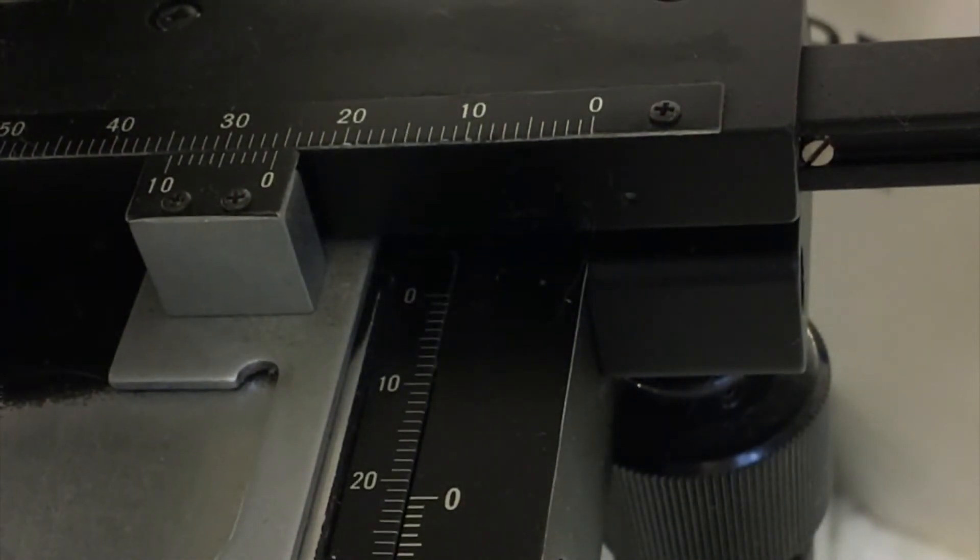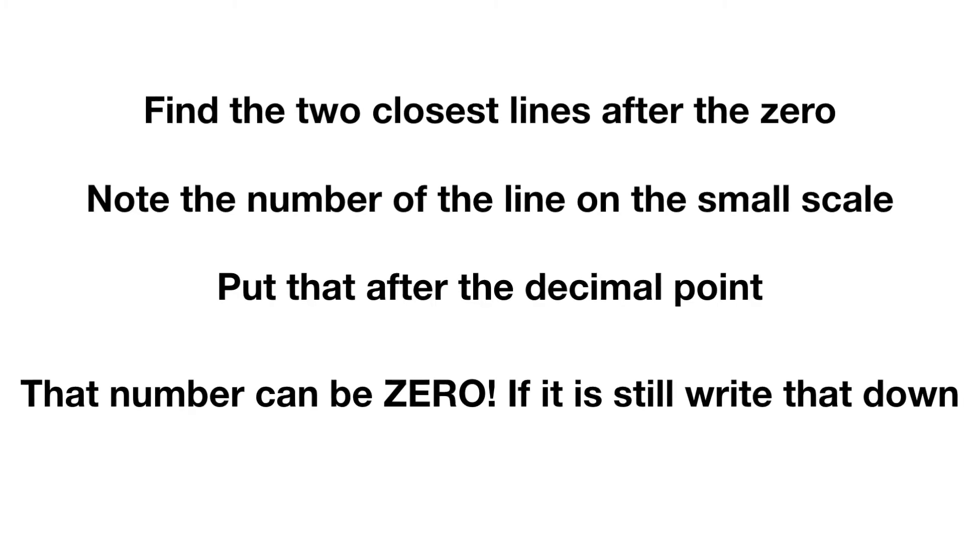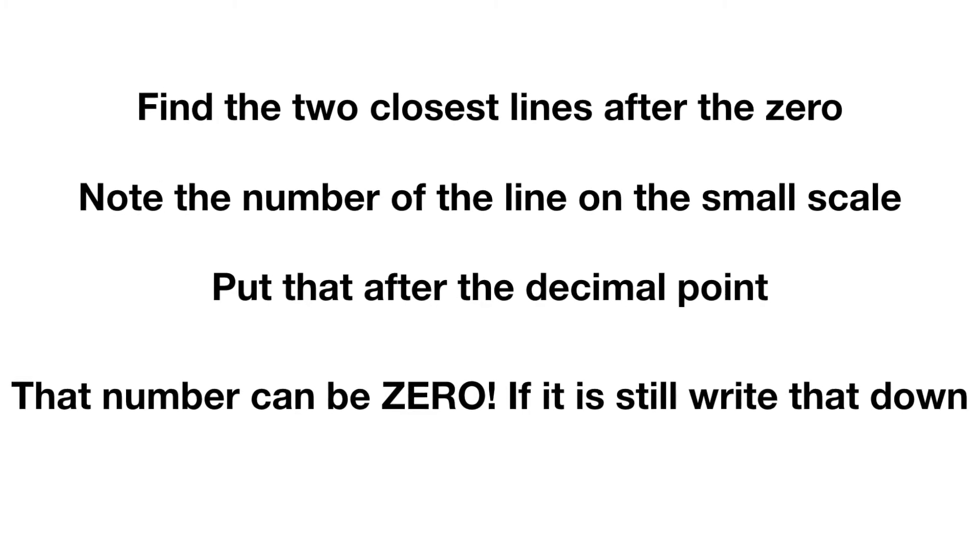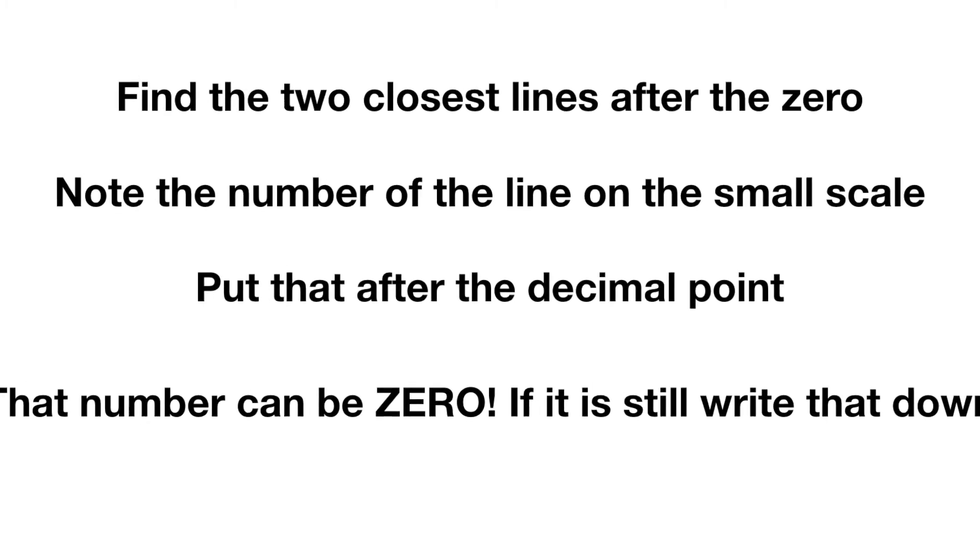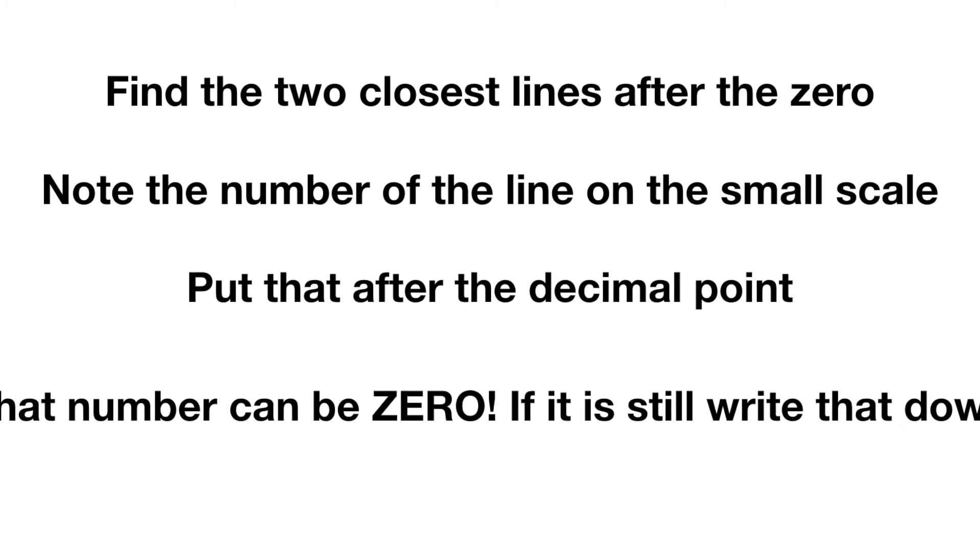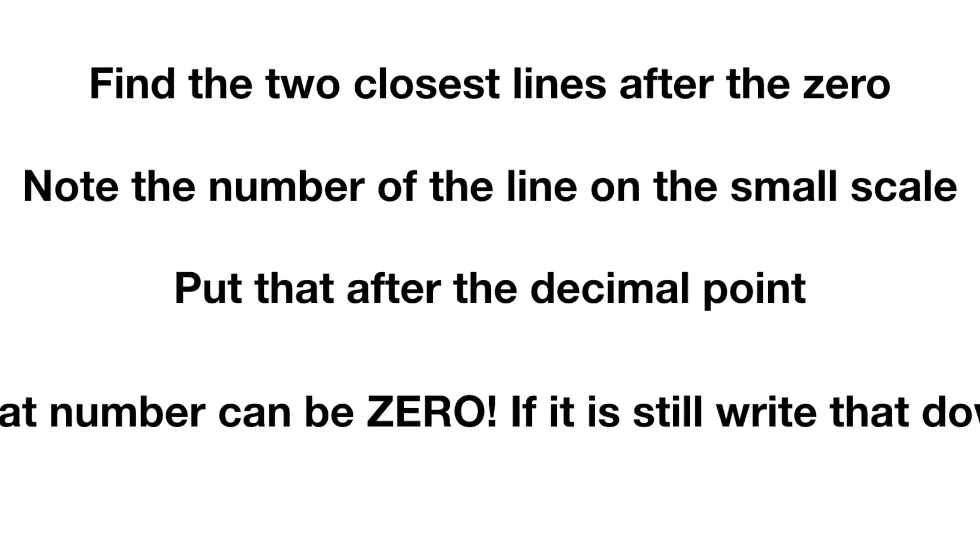Then we're going to look at the next part. Find the lines that line up across the two scales after the zero. Note the number of the line on the small scale and put that after the decimal point. It can be zero, and if it is, still write it down.